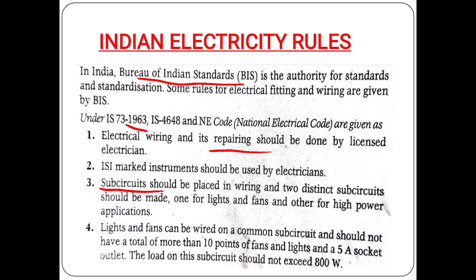One sub-circuit for lights and fans, and another for high power applications. A common sub-circuit wired for lights and fans should not have a total of more than 10 points. It should include a 5-A socket outlet, and the load on this sub-circuit should not exceed 800W.